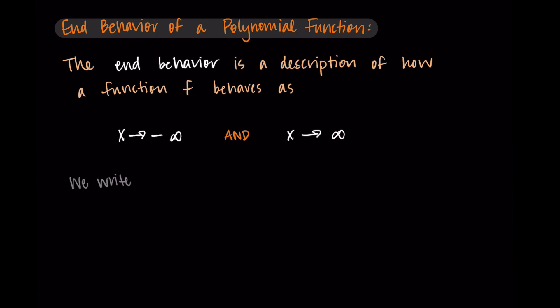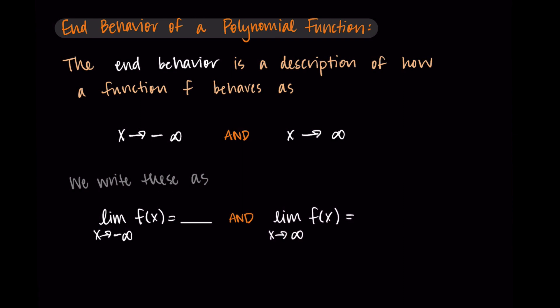I like to write the end behavior using limit notation. We're not going to formally define limits here — you'll use limits in a calculus context — but for now we're just going to use the notation as the proper way to talk about end behavior. We write it mathematically as the limit as x approaches negative infinity of f(x), which is equal to something. Then we also write the limit as x approaches positive infinity of f(x), also equal to something.